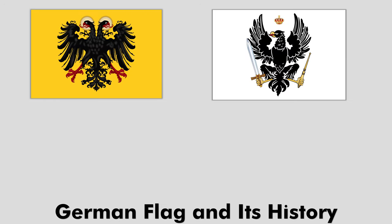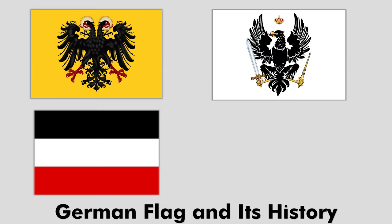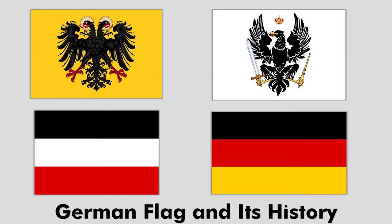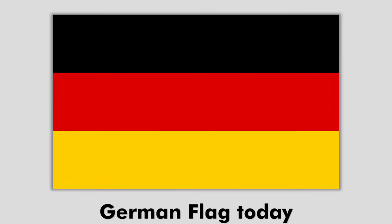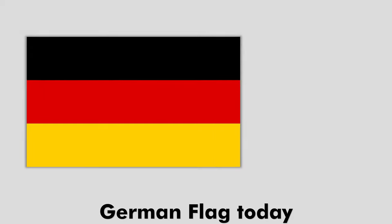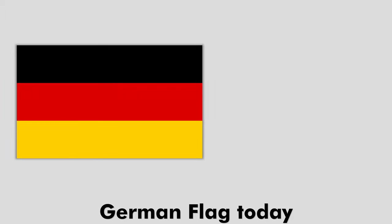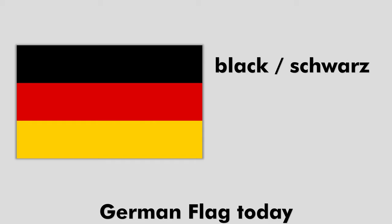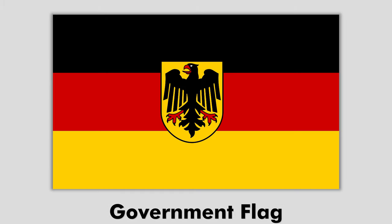In this video, we are going to learn about the German flag and its history. This is the German flag used today. The German flag features a simple tricolor, made of three equal horizontal bands, colored black, red and gold.